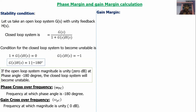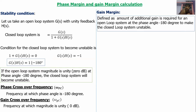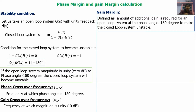Gain margin is the amount of additional gain required in the open loop system at a phase angle of minus 180 degrees to make the closed loop system unstable. We know the stability condition: if the open loop system magnitude is unity at a phase angle of minus 180 degrees, the closed loop system will be unstable. Some additional gain is required to bring the gain to unity — that gain is called the gain margin.